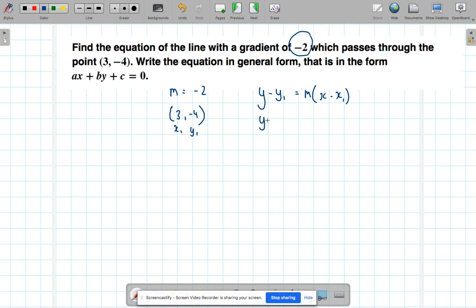So y - y₁, y - (-4), equals m, which is -2, outside of x - x₁, which is 3. A minus minus 4 is a plus 4, so y + 4 equals, and let's remove the brackets in the same step, so we have -2x. -2 times -3, a negative times a negative is a positive, so +6. Okay.